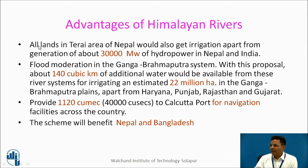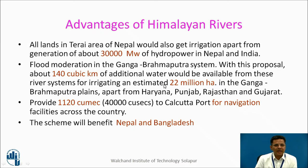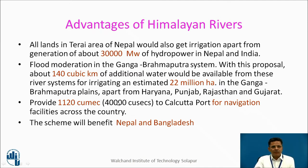Advantages of the Himalayan River Development Component: about 30,000 megawatts of hydropower will be available; 140 cubic kilometers of additional water will be available, sufficient for 22 million hectares of land in Ganga-Brahmaputra plains apart from Haryana, Punjab, and Rajasthan; it will provide a sustained minimum flow of 1,120 cumecs for navigation in Ganga; and the scheme will also benefit Nepal and Bangladesh.